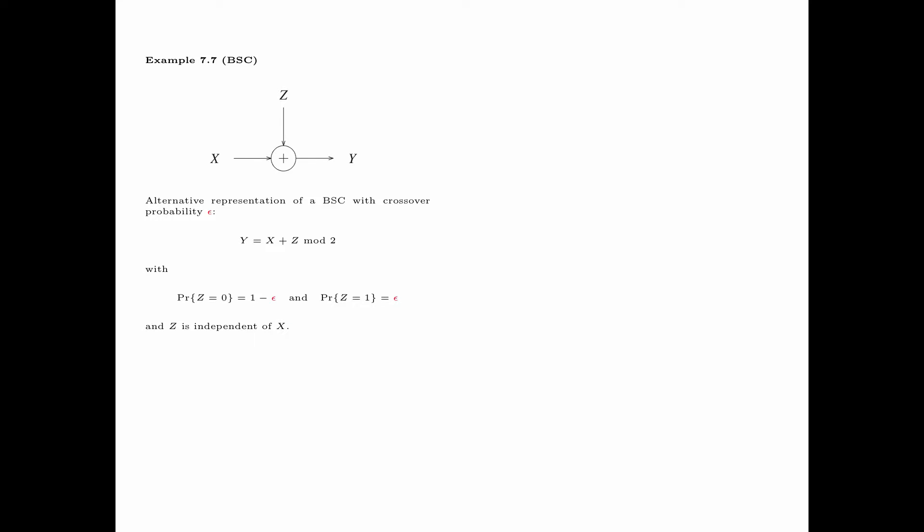In Example 7.7, we look at an alternative representation of a BSC with crossover probability epsilon. The output variable y equals the input variable x plus a noise variable z, where addition is modulo 2, with the probability that z equals 0 being 1 minus epsilon, and the probability that z equals 1 being epsilon. Z is independent of x. When z equals 0, y equals x, and when z equals 1, y is not equal to x. Therefore y is not equal to x with probability epsilon, which is exactly the BSC model seen before.